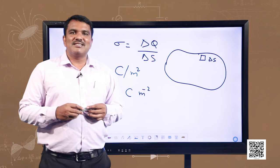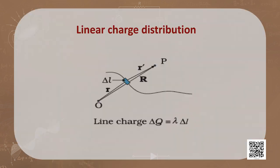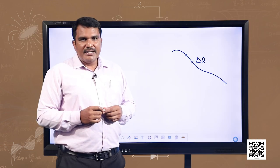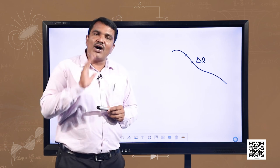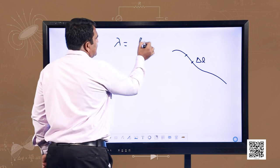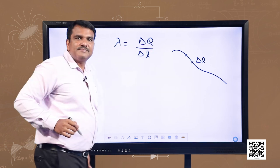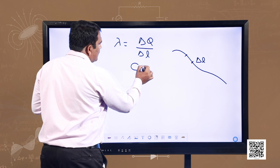Now, what if charge is distributed over a wire? We can cut a small line element delta l from the wire which includes a large number of microscopic charge constituents, where delta q is the charge contained in this line element. We define linear charge density lambda as delta q divided by delta l, and its unit becomes coulomb per meter.